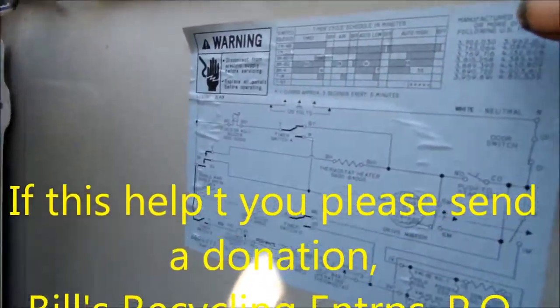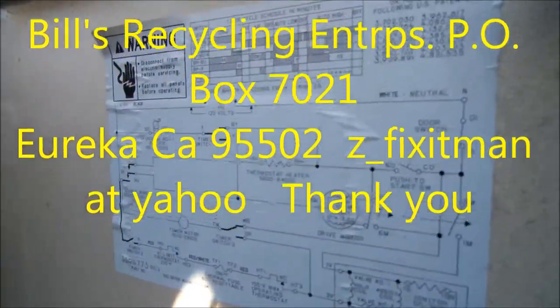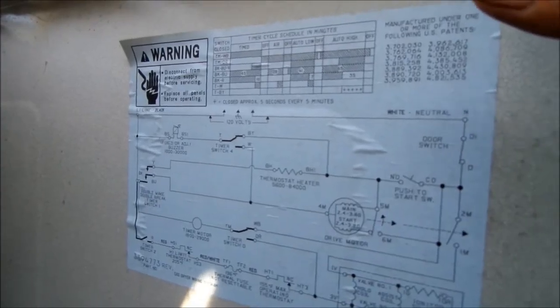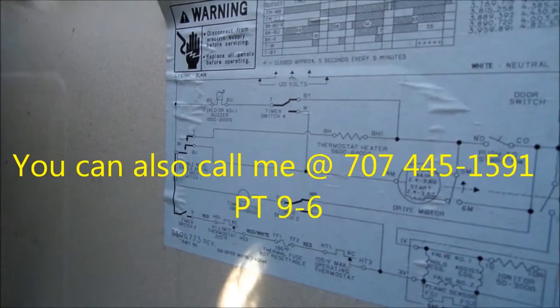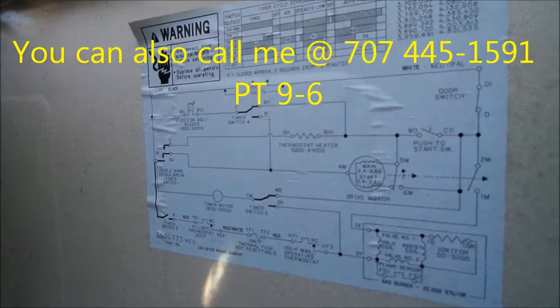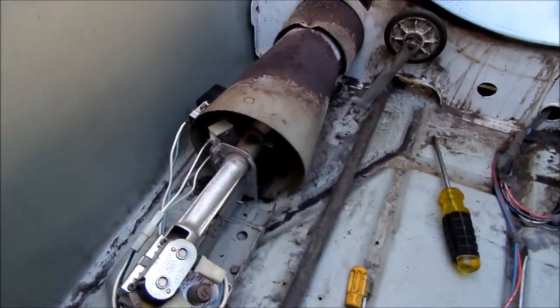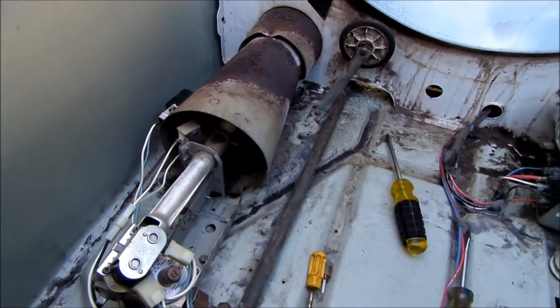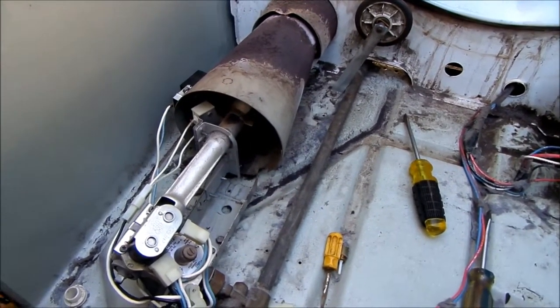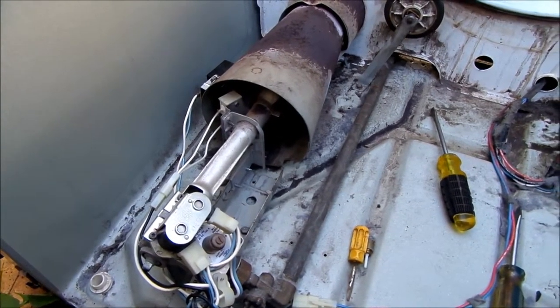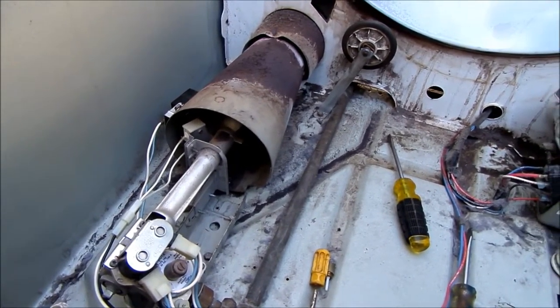So that's a tip for you. Thanks for watching. If we could help you, please send me a donation to Schatz Recycling Enterprises, P.O. Box 7021, Eureka, California 95501. And if you need any help, you can contact me, 707-445-1591, and that's Pacific Time 9 to 6. You can also send me an email at eurekarecycler at yahoo.com or z underscore fixitman at yahoo.com. Thanks for watching. Bye.